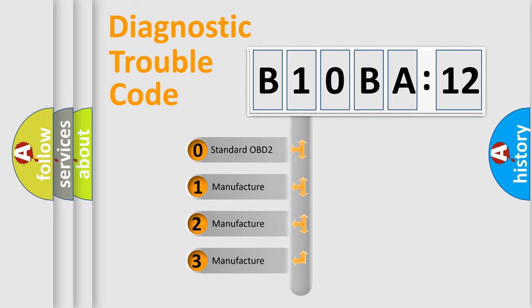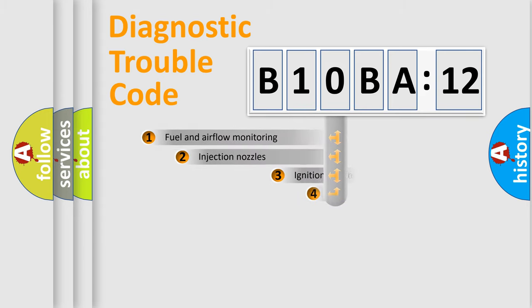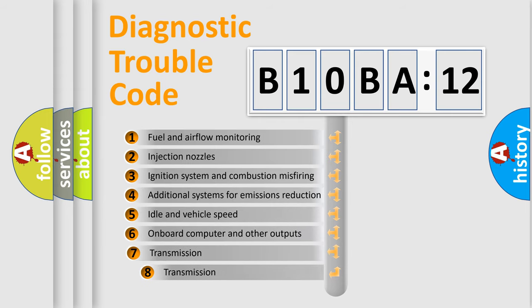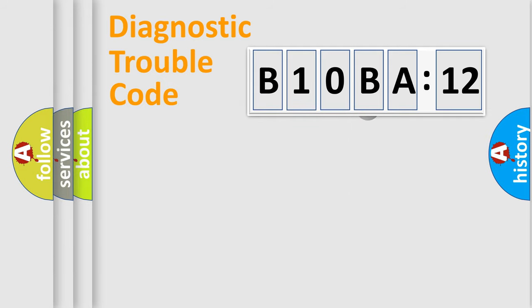If the second character is expressed as zero, it is a standardized error. In the case of numbers 1, 2, or 3, it is a manufacturer-specific error. The third character specifies a subset of errors. The distribution shown is valid only for the standardized DTC code. Only the last two characters define the specific fault of the group.